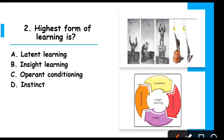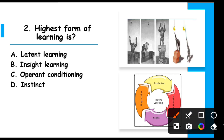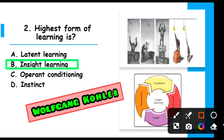Question number 2 is: What is the highest form of learning? The correct option is option B — Insight Learning. Insight learning is important in biology and was described by scientist Wolfgang Kohler.